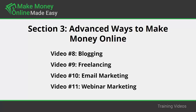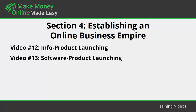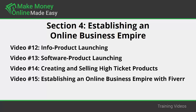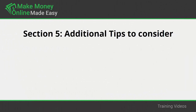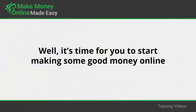Section 4: Establishing an online business empire — in videos 12 through 16, we'll talk about info product launching, software product launching, creating and selling high-ticket products, establishing an online business empire with Fiverr, and launching your coaching program. Section 5: Additional tips — in videos 17 through 20, we'll cover do's to apply, don'ts to avoid, premium tools and services, and shocking case studies. It's time for you to start making some good money online.